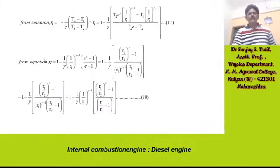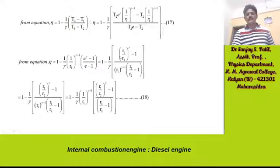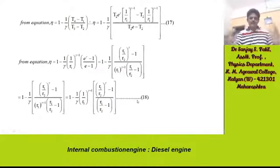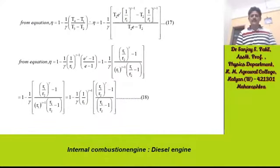From these equations, eta = 1 − (1/gamma) × (T4 − T1)/(T3 − T2). Substituting the derived expressions and rearranging terms, we arrive at the final efficiency equation for the diesel engine. This is the efficiency of the diesel engine.